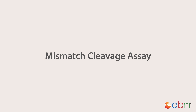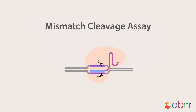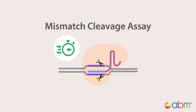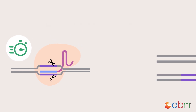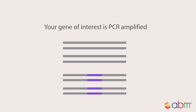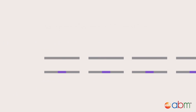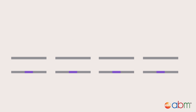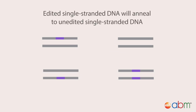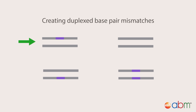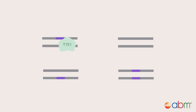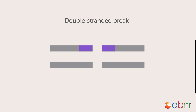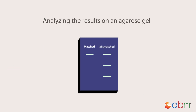Let's take a look at the mismatched cleavage assay. This assay is commonly used for CRISPR knockout and indel detection due to its simplicity and fast turnaround time. Following CRISPR knockout of your gene of interest, DNA is extracted from the cells and your gene of interest is PCR amplified. During the assay, high temperature is used to denature double-stranded DNA into single-stranded DNA, which is then followed by low temperature. In this process, edited single-stranded DNA will anneal to unedited single-stranded DNA, creating duplexed base-paired mismatches. The T7E1 enzyme is then used to specifically detect these mismatched DNAs, resulting in a double-stranded break. Analyzing the results on an agarose gel reliably shows which clones have undergone editing.